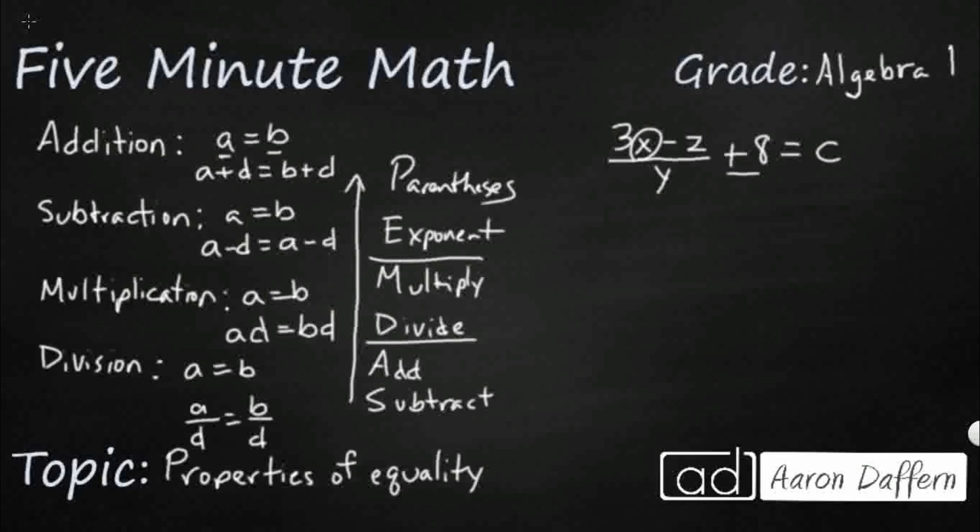And I see this plus eight. So I'm going to use the subtraction property and I'm going to subtract eight from both sides. So the subtraction property of equality says I can subtract eight from both sides. So that's going to get rid of that because plus eight minus eight, right? So that's going to leave me with this 3X minus Z over Y equals C minus eight.